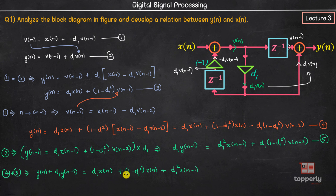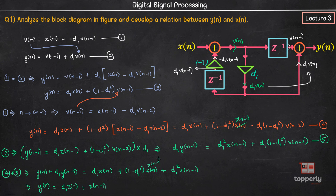This equation is written only in terms of y and x, so we have accomplished our goal of developing a relationship between y of n and x of n. Rephrasing: y of n = d1 times x of n + (1 minus d1 squared) times x of n-1 minus d1 times y of n-1. This is our final relation between y of n and x of n for the given system.